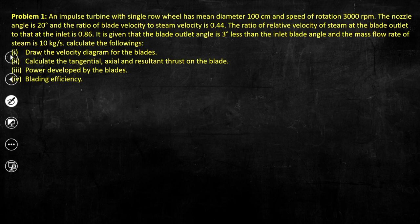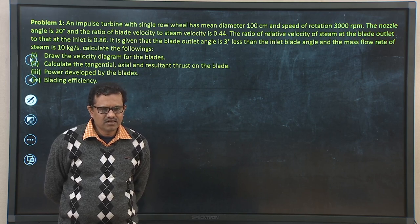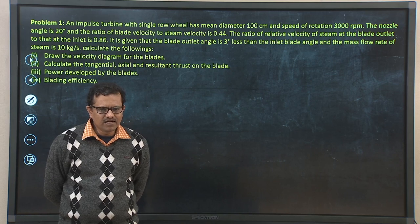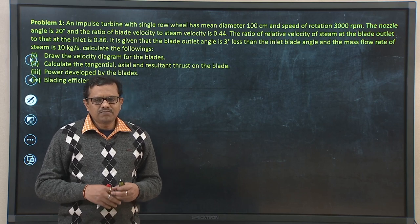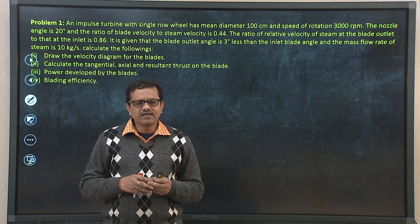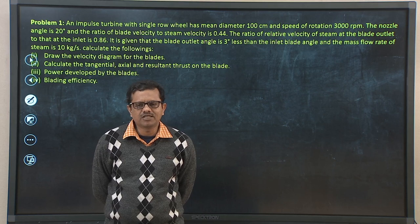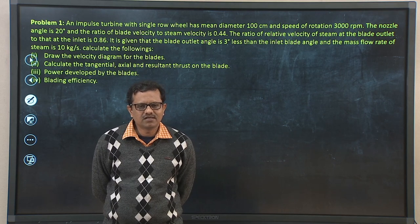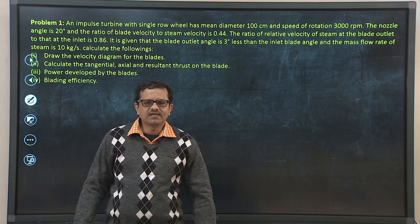We need to calculate a few parameters. First we need to draw the velocity triangles, then calculate the tangential, axial, and resultant thrust on the blades, power developed by the blades, and lastly the blading efficiency. It is convenient to solve the problem by drawing the velocity triangles properly first, and then calculate the required parameters.